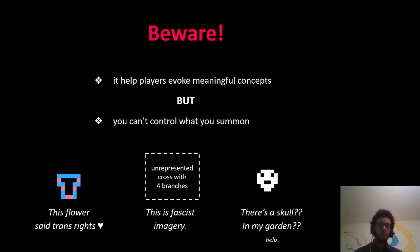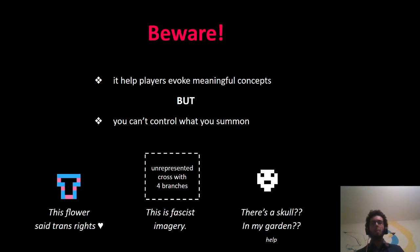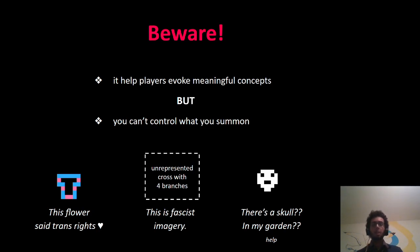But you must be cautious, because while it's very cool to evoke meaningful concepts in players, and they can be very powerful, you cannot control them. They can be very positive — for instance, a flower shaped like the letter T, blue and pink, which I gave the meaning of trans-rights activism. That's very positive and strong, embedded in the real world. But I also came across flowers that looked like crosses with four branches, resembling fascist imagery — and that was not something I wanted in my game. You have to ask yourself: is this something you want to be able to evoke? And there's no easy solution to prevent it.